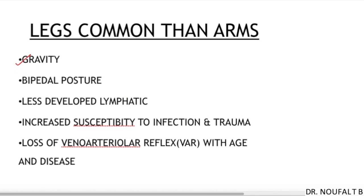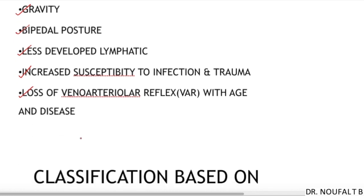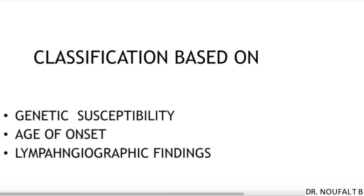Primary lymphedema affects the legs more commonly than the arms. This is because of the effect of gravity, bipedal posture of human beings, less developed lymphatics in the lower limb compared to the arms, and increased susceptibility to infection and trauma.